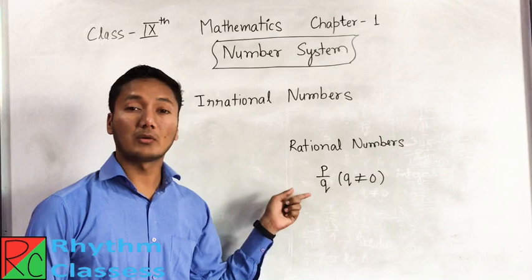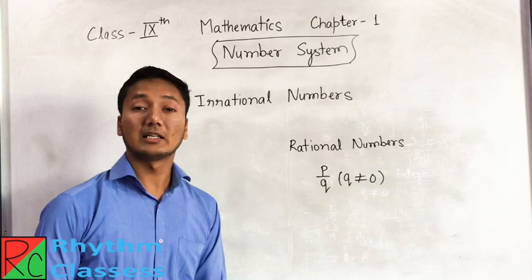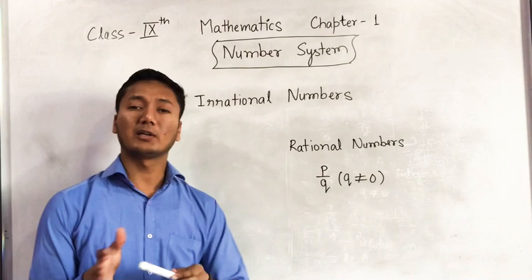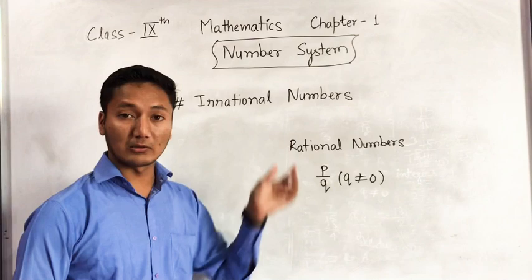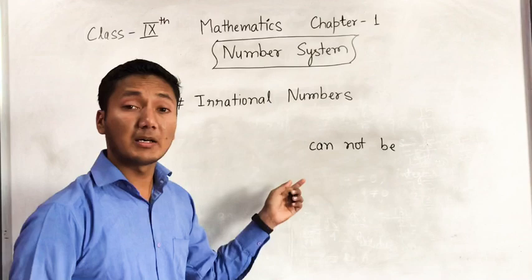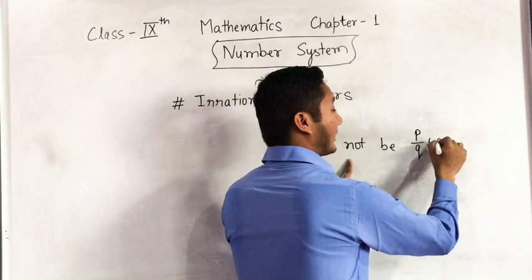What are irrational numbers? We can simply say that numbers which are not rational are irrational. It's not a specific definition. We can say that any number which cannot be written in the form of P by Q, where P and Q are integers and Q is not equal to 0, is an irrational number. For example, √2, √5, √7, π, 0.10110111...